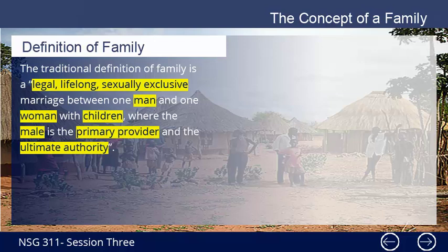The World Health Organization's acceptable definition defines family as a self-identified group of two or more individuals whose association is characterized by special terms, who may or may not be related by blood, kinship or law, but who function in a way that they consider themselves to be a family. A family refers to two or more individuals who depend on one another, who choose to be involved in each other's lives and are therefore bound together by emotional ties and a sense of belonging, for emotional, physical and/or financial support.